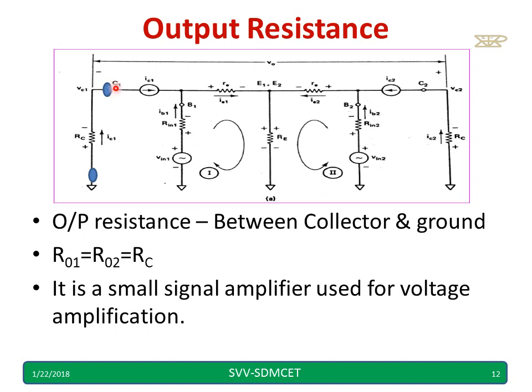This is the output resistance I want at collector 1 and collector 2. So collector 1 with respect to ground is nothing but RC only. Similarly collector 2, if you want Ro2 with respect to ground C2 with respect to ground, means I will get RC only, hence output resistance directly I can write it is RC.